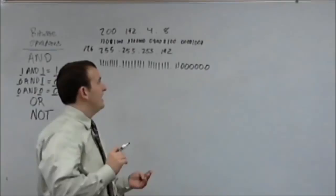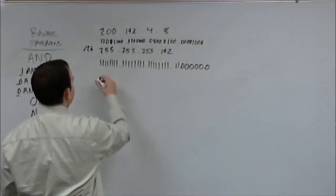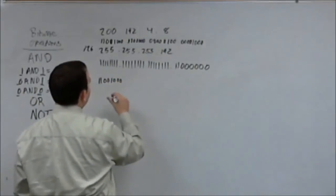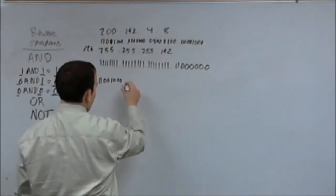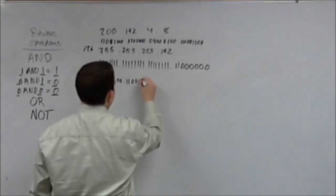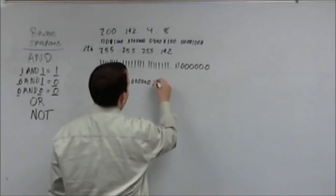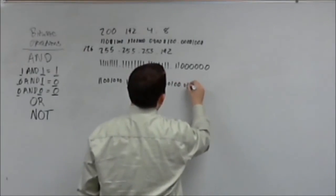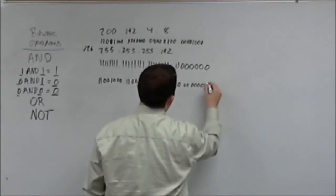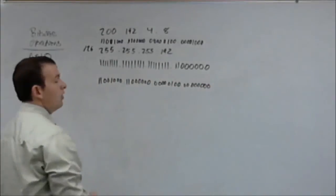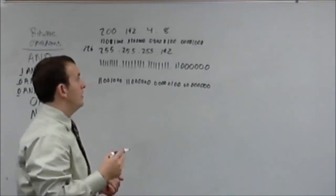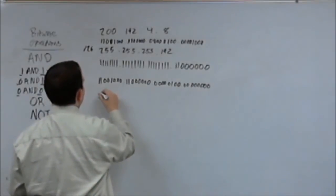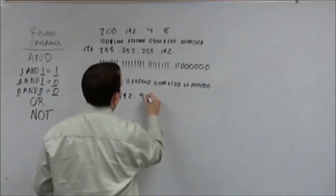Alright, so let's find this network address. This network address, first let's do this first column, which is going to be 11001000. Because where the ones match up, we put a one. Where they don't match up, we put a zero. Then you're going to have 11000000. Then you're going to have 00000100. Alright, so your network address for this, in particular, IP address is going to be 200.192.4.0. Now, let's switch it up a little. Let's change this address to be 200 at the end.